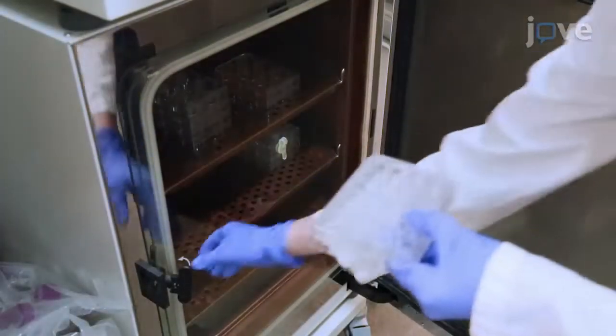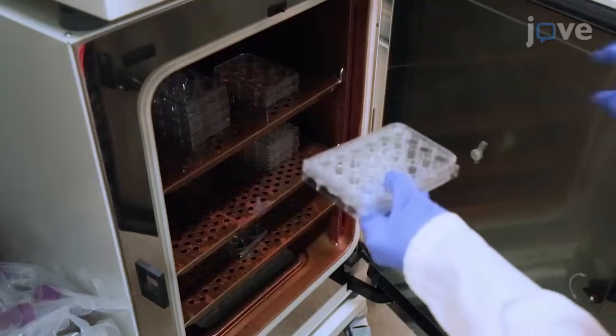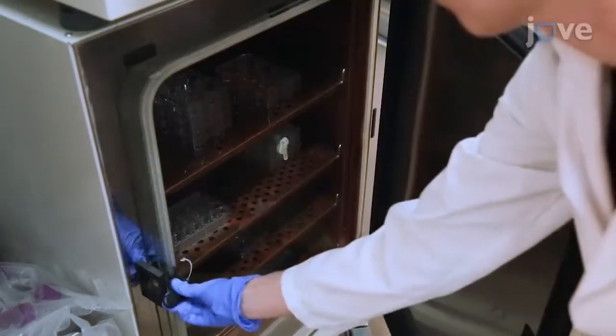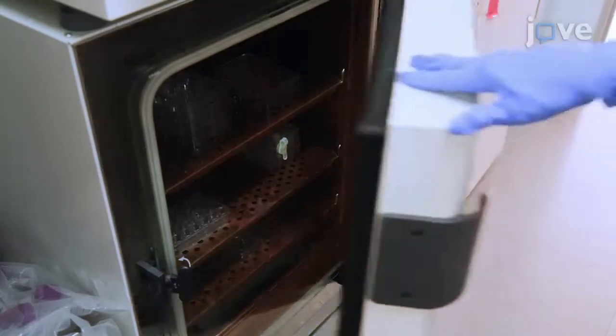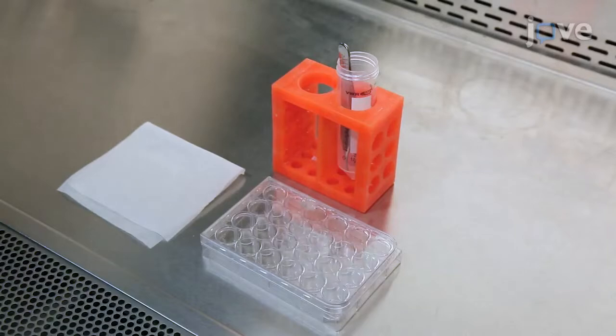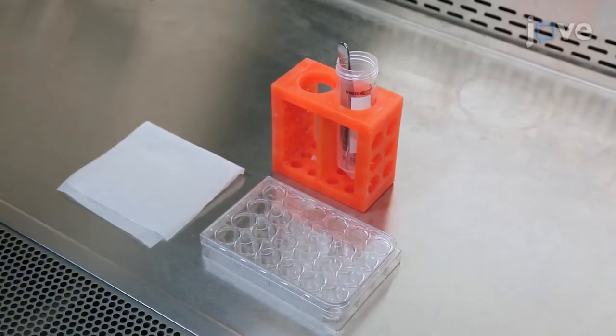Cover the 24-well plate with a lid and place the plate into a tissue culture incubator at 37 degrees Celsius for two hours to permit the ECM solidification on the membrane. After two hours, remove the plate from the incubator and place in a tissue culture hood.